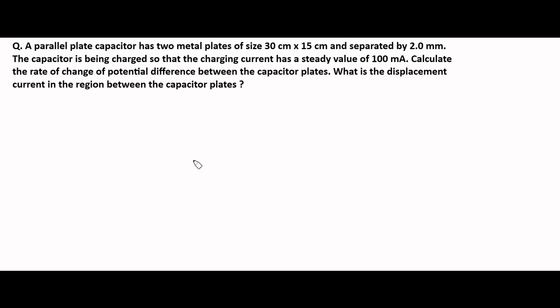Here is another question on displacement current in a parallel plate capacitor. The question is: a parallel plate capacitor has two metal plates of size 30 cm × 15 cm, separated by 2 mm. The capacitor is being charged so that the charging current has a steady value of 100 milliampere. Calculate the rate of change of potential difference between the capacitor plates and the displacement current in the region between the plates.